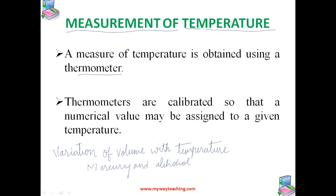These thermometers are calibrated so that a numerical value may be assigned to a given temperature. For the definition of any standard scale, two fixed reference points are needed. Since all substances change dimensions with temperature, an absolute reference of expansion is not available. However, the necessary fixed points may be correlated to physical phenomena that always occur at the same temperature. The ice point and the steam point of water are the two convenient fixed points and they are known as freezing and boiling points. These two points are the temperatures at which pure water freezes and boils under standard pressure.